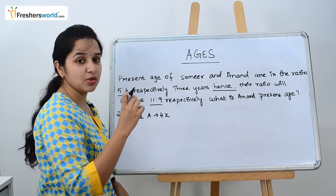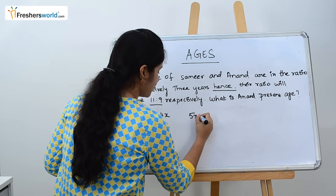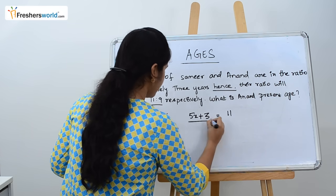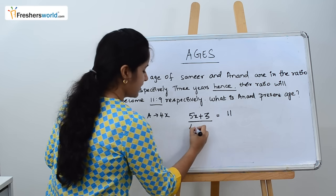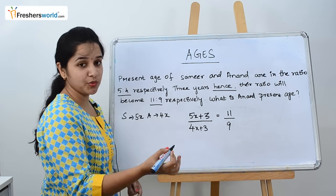We know ratio will always be shown in a fraction. They're saying 5X plus 3 years will become 11. Similarly, 4X after 3 years will become 9.